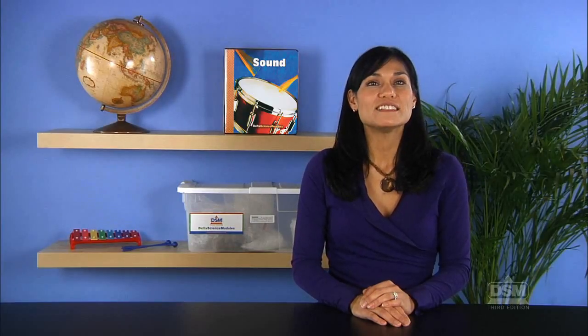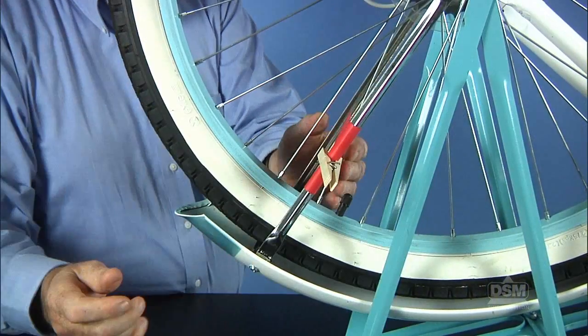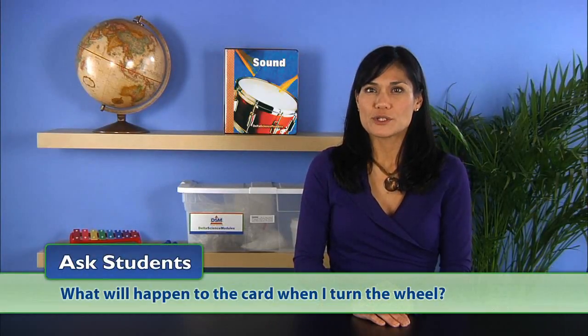Next, turn the bicycle upside down in front of the class where everyone can see it. Point out the index card fastened to the rear wheel. Ask students, what will happen to the card when I turn the wheel?